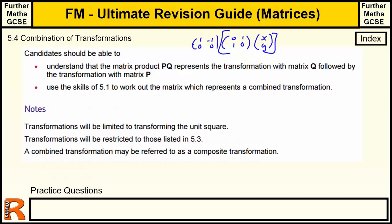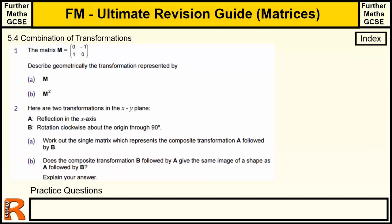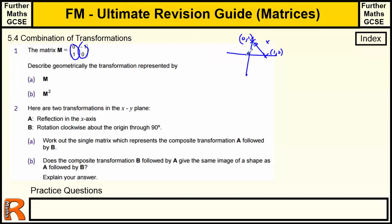Let's look at some questions. Matrix M is a given transformation — describe the geometric transformation it represents. When looking at a transformation, we think about what happens to the unit square points: (1,0) and (0,1). The first column tells us where (1,0) goes — it goes to (0,1), moving up. The second column, (−1,0), means that point comes down.